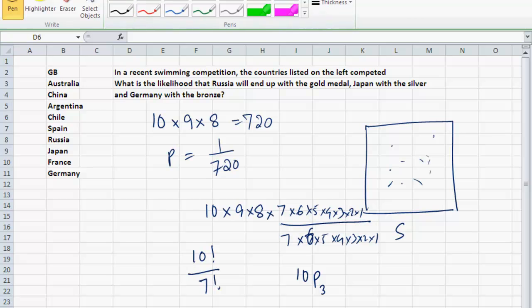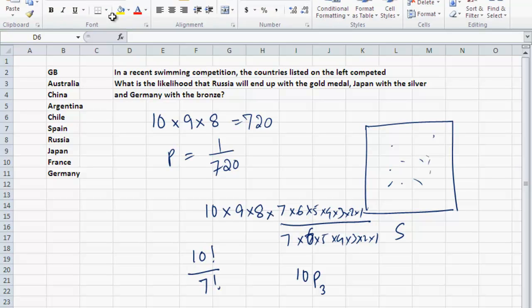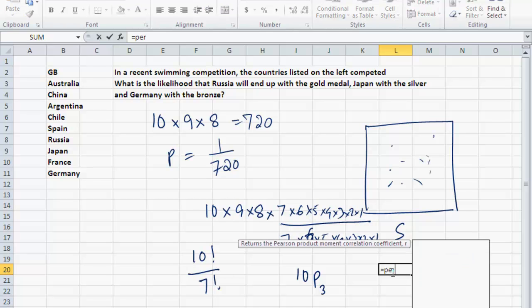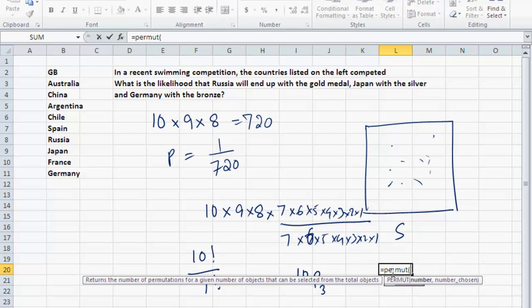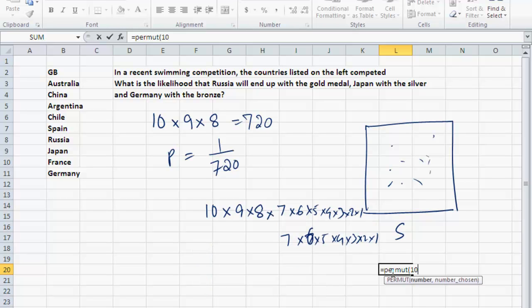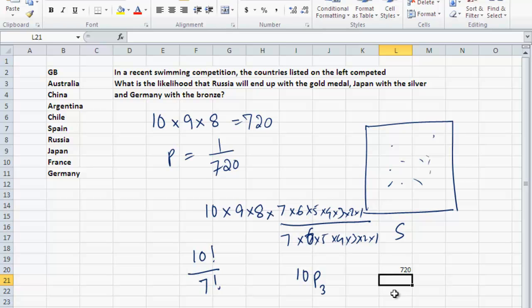There is a built-in function in Excel to do this, called PERM. Let me show you: equal to PERMUTE. It asks how many do you have total? I have a total of ten. And I'm choosing three out of it. And I come up with 720. So mercifully, you don't have to do this calculation manually. PERMUTE is the built-in function in Excel, and that will calculate the number for you.